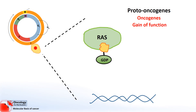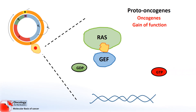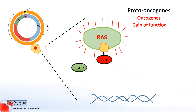This means that the GTP is stuck, bound to the RAS protein, and it's permanently active, leading to uncontrolled cell division. Because the mutation is leading to a gain of function, only one copy of the gene needs to mutate to cause this to happen.